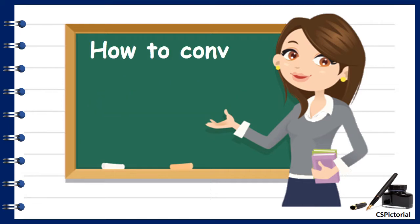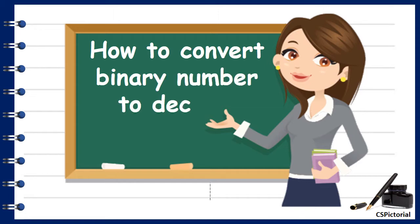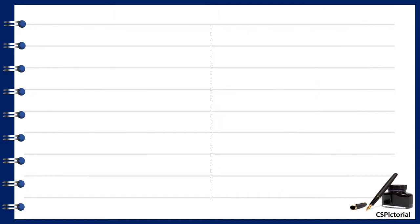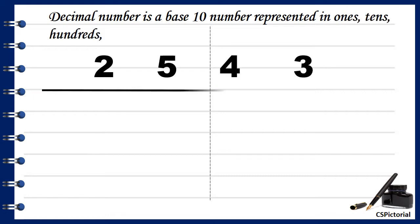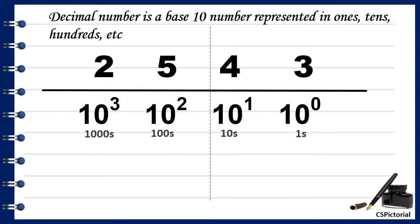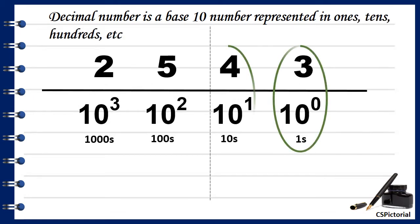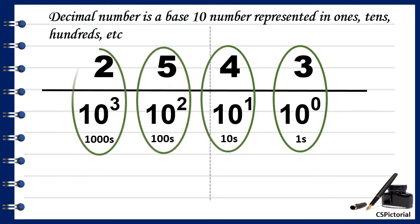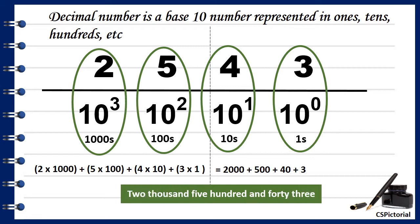First, let us know how to convert a binary number to a decimal number. As we all know already, any decimal number can be represented in powers of 10 as 1s, 10s, 100s, 1000s, etc. For example, consider the number 2, 5, 4, 3 — it is written and spelled as 2543.